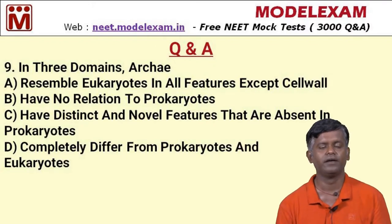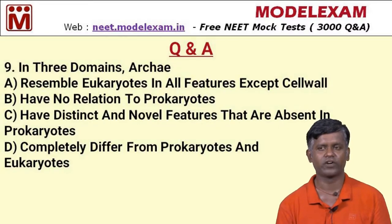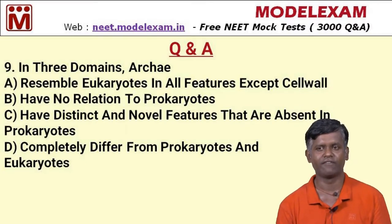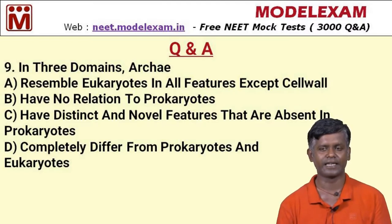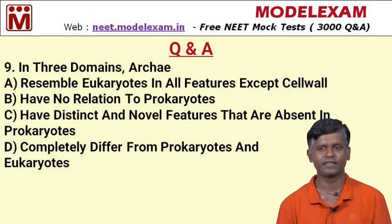Question number nine: in the three-domain system, Archaea — option A: resemble eukaryotes in all features except cell wall, option B: have no relation to prokaryotes, option C: have distinct and novel features that are absent in prokaryotes, option D: completely differ from prokaryotes and eukaryotes. This is a direct question: Archaea have distinct and novel features that are absent in prokaryotes. So option C is the answer.